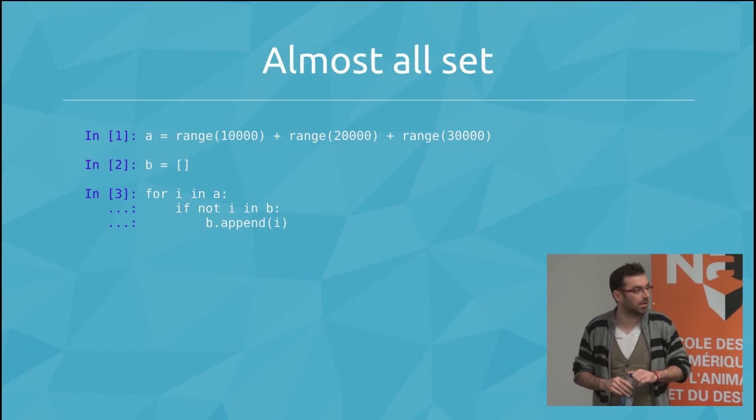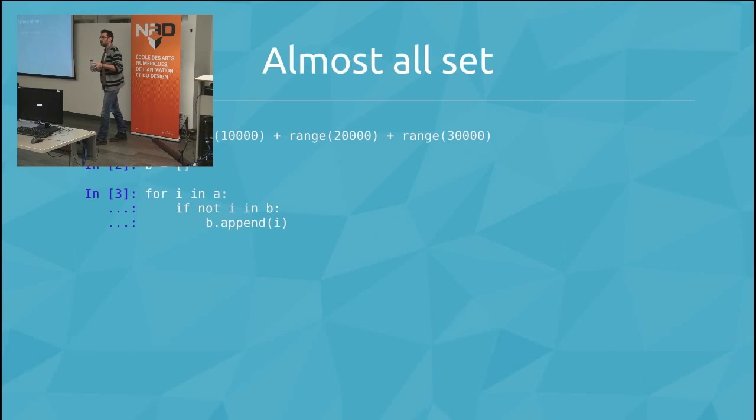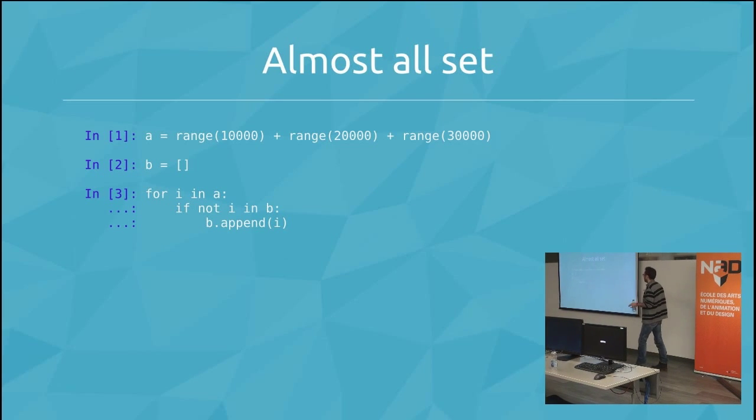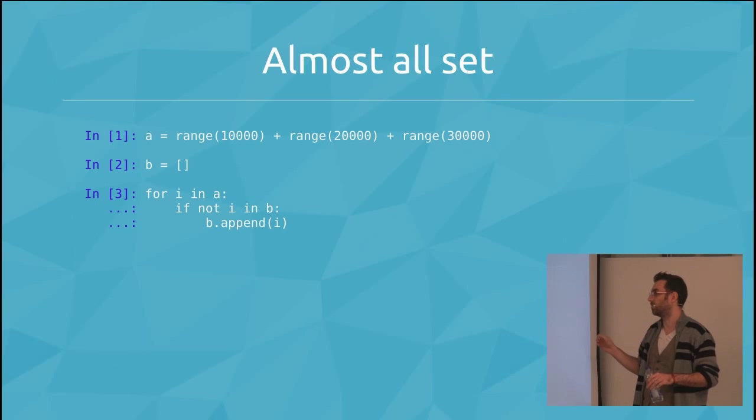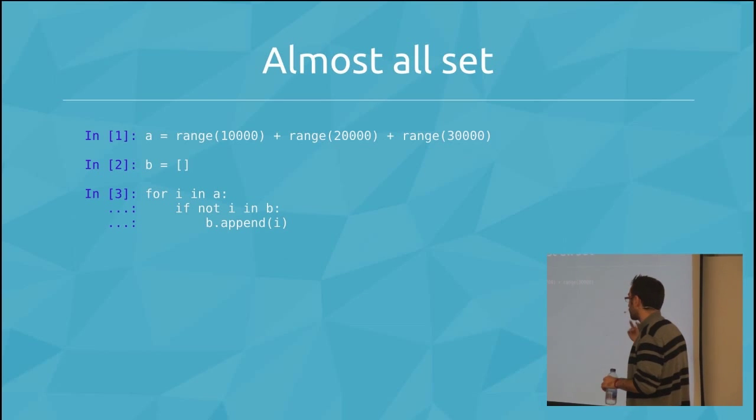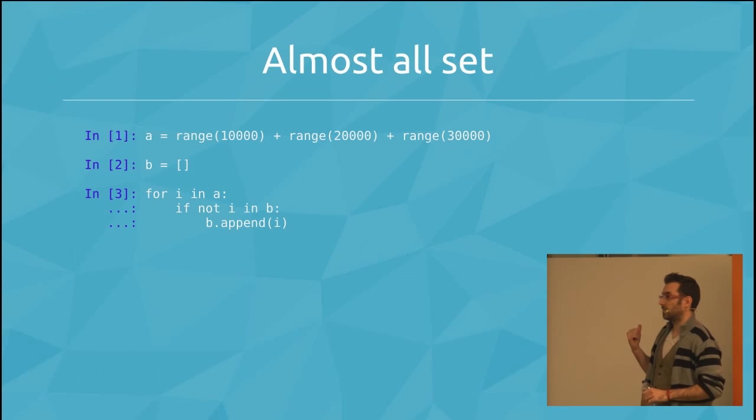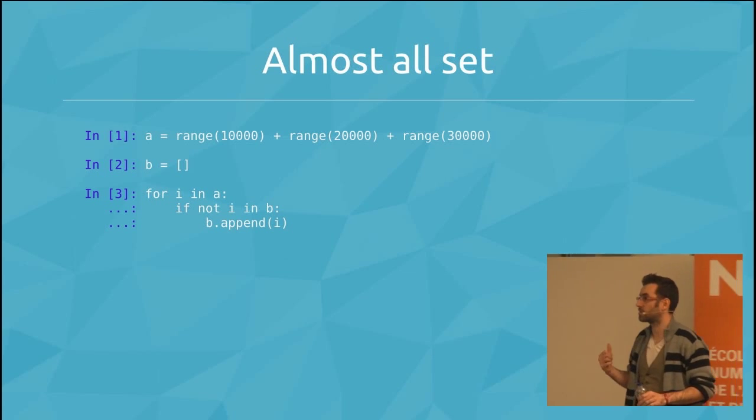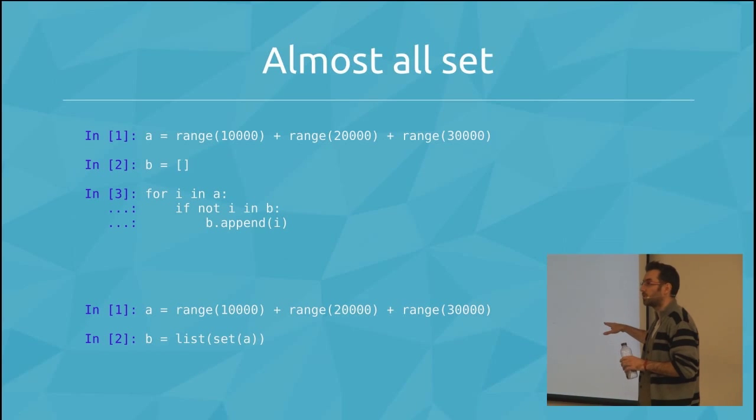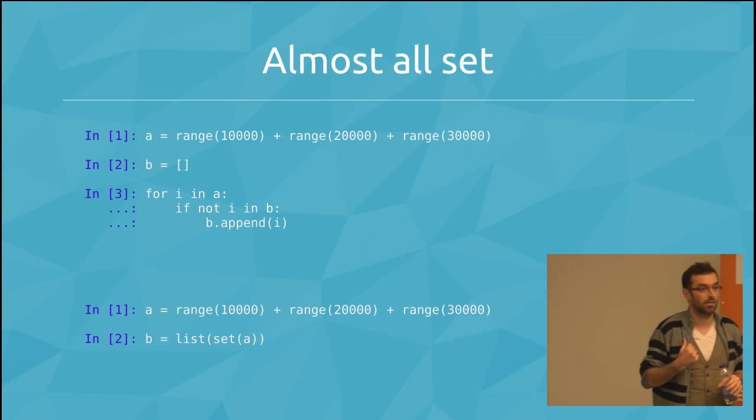There is a simple exercise in Python. You can ask someone to do this exercise and know if this guy knows Python. So there is a simple exercise. You've got a huge list. So it's 10,000 plus 20,000 plus 30,000. You have to do a list with only singleton. So that means you don't want any number more than once in a list. That is the JavaScript way. So you go through your list, you create a new list, you go through your list. If the number is not in the previous list, you add it. That will crash in Python because it's too heavy.